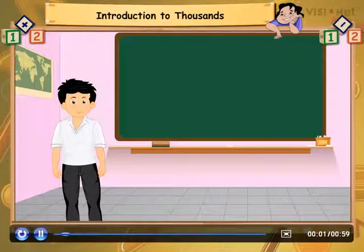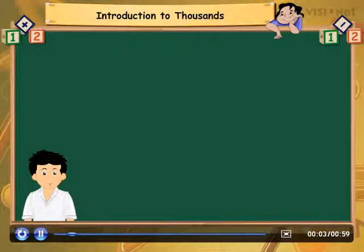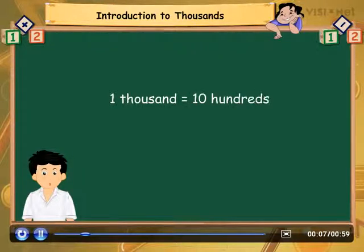Introduction to thousands. As we know, one thousand is nothing but the group of ten hundreds. It is numerically written as one thousand.